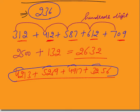42 plus 52: 40 plus 50 is 90, plus 2 plus 2 is 94. 94 plus 49 is difficult to add straight, so add 94 plus 50 to get 144, minus 1 gives 143. Now 143 plus 32: add 2 to get 145, then add 30 to get 175.